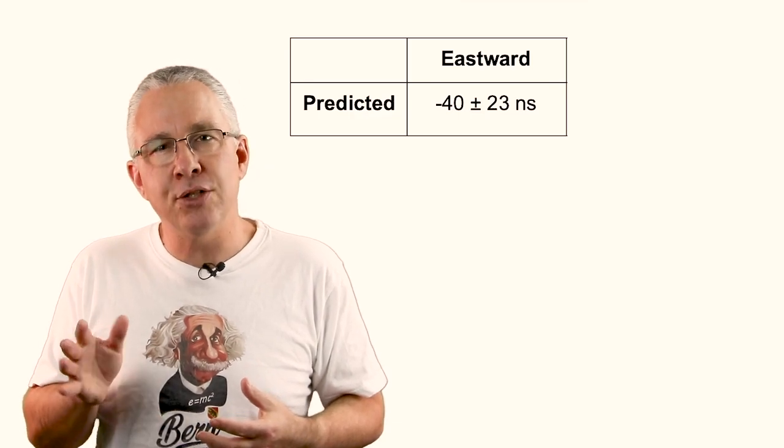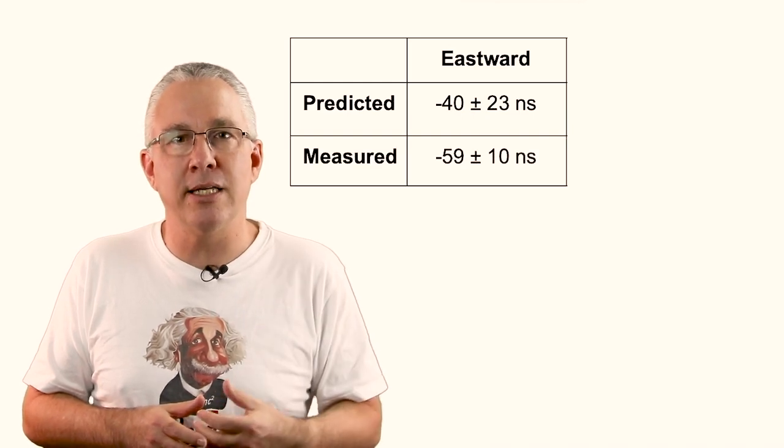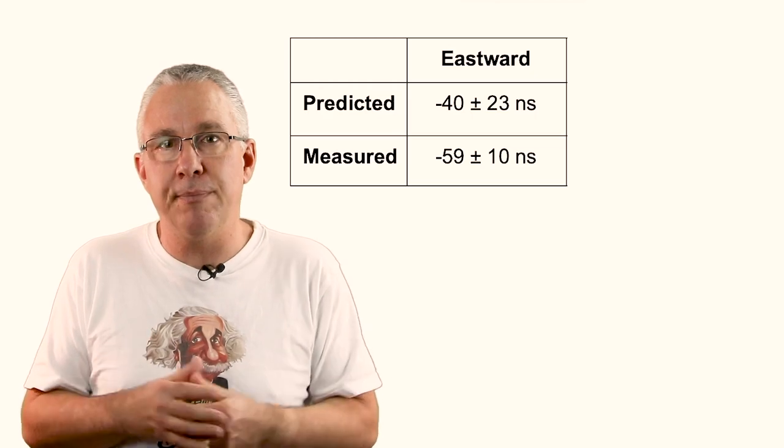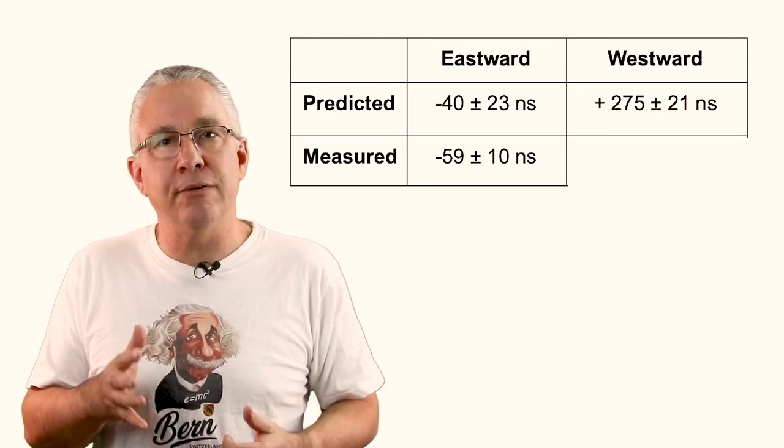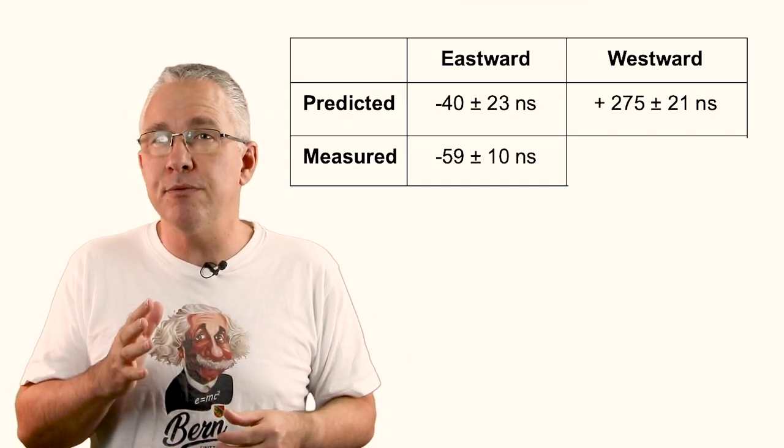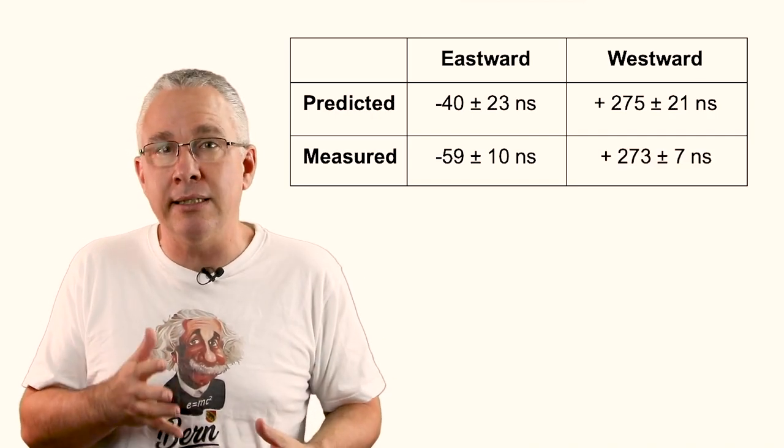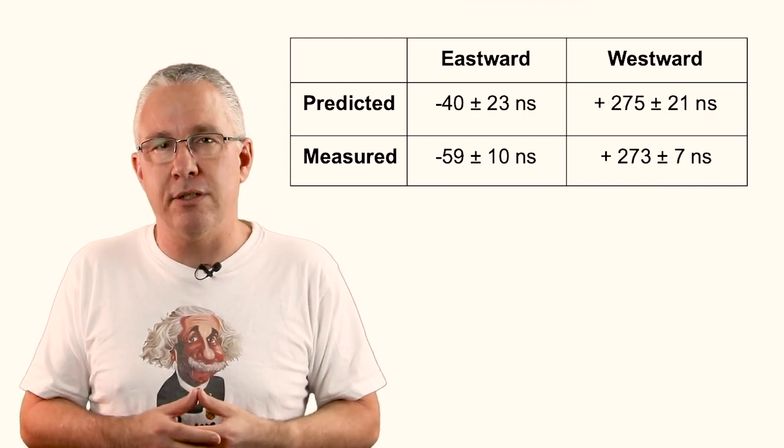They predicted that with the eastward journey they would lose about 40 nanoseconds with a margin of uncertainty of about 23 nanoseconds. And what they got was 59 nanoseconds with an uncertainty of 10 nanoseconds. That's well within their predictions. When they were looking in the westerly direction they predicted a gain of 275 nanoseconds with an uncertainty of 21 nanoseconds. And they observed 273 nanoseconds with an uncertainty of 7 nanoseconds. Again extremely good results and verified time dilational effects.